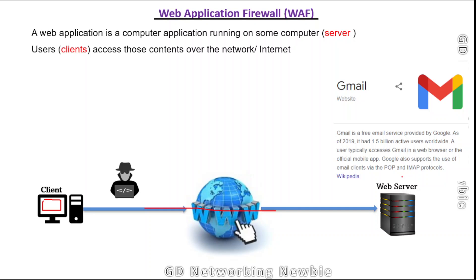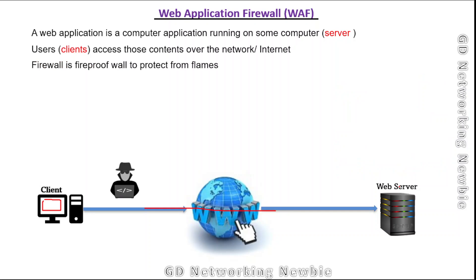To secure our web applications hosted on a server machine, we need a specific device or software — that is known as a firewall. A firewall is essentially a fireproof wall to protect our network from flames. This wall can protect our network or web application from those flames.